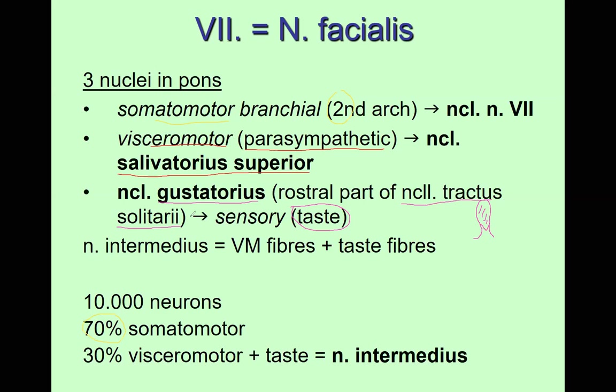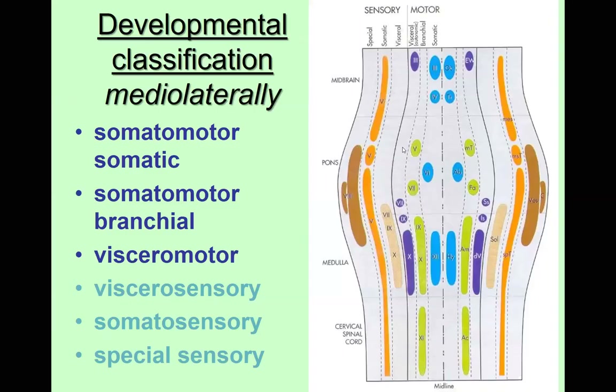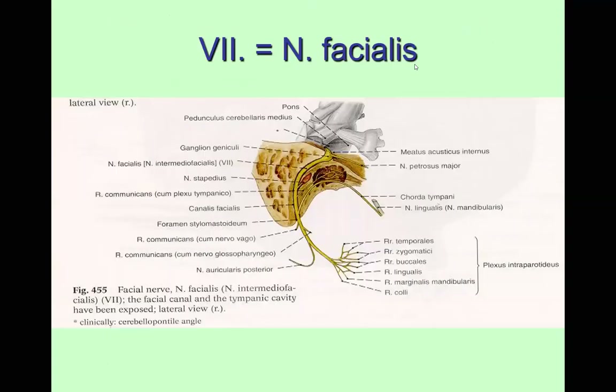The nucleus of the solitary tract is the viscerosensory nucleus, and its rostral portion is for taste — it's called the gustatory nucleus. Why is it called the nucleus of the solitary tract? Because from it runs a tract upward that is called the solitary tract — a tract that is alone and not accompanied by others. It's quite a strange anatomical name, but that happens in anatomy.